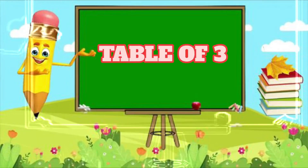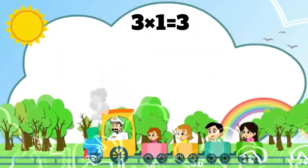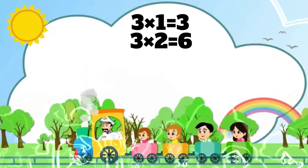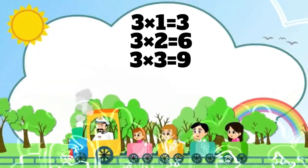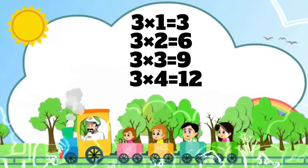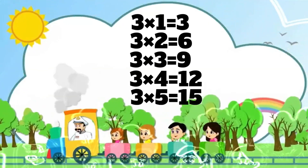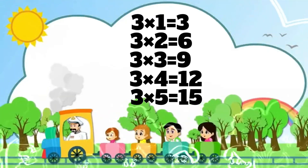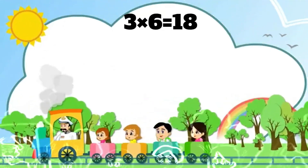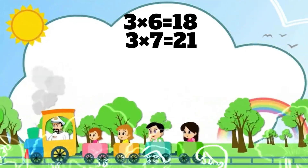Table of Three. Three one's a three. Three two's a six. Three three's a nine. Three four's a twelve. Three five's a fifteen. Three six's a eighteen. Three seven's a twenty-one.